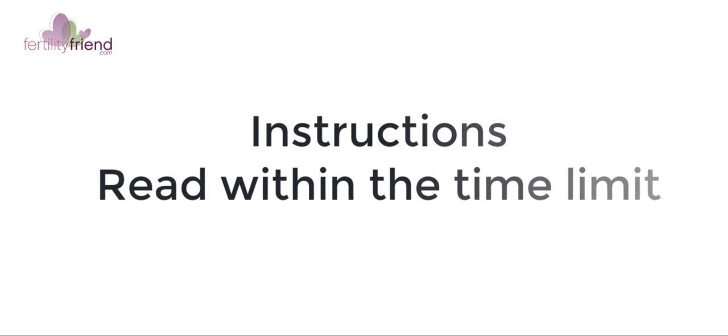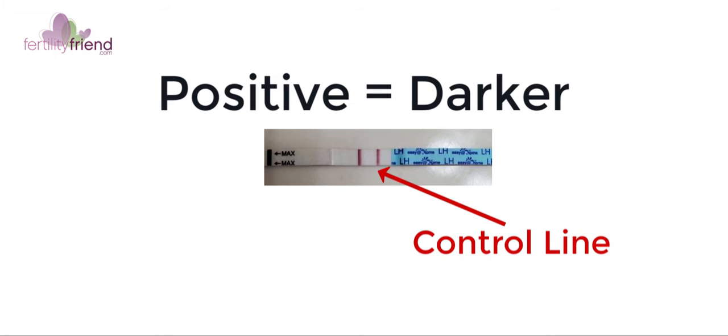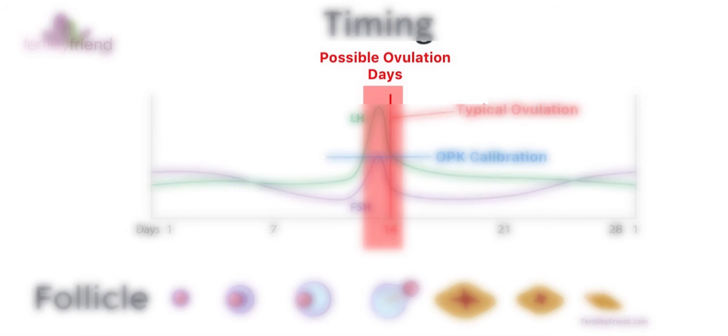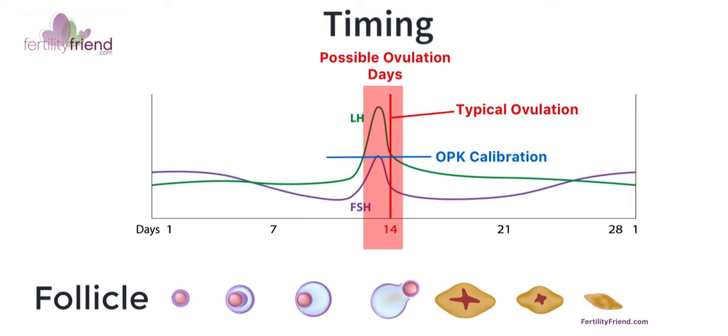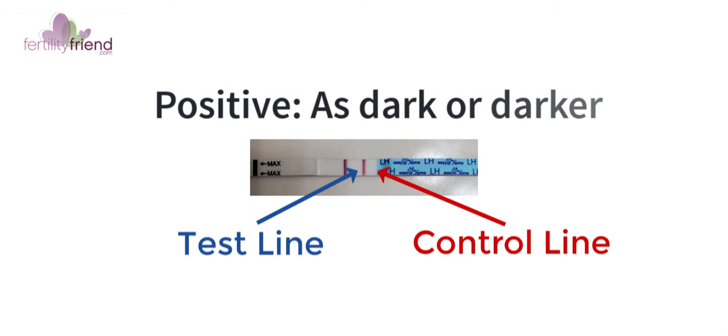Reading the test: the test generally comes with instructions on how it should be performed and timing for reading the result. Make sure to respect the instructions to be certain that the test is valid. On a practical level, the test is considered positive when the test line is darker or as dark as the control line. That may seem a simple enough criterion, but in reality many people struggle with it and occasionally over-analyze the test. Because of the timing between the LH surge and ovulation, and the LH profile variability, you do not need to be extremely accurate in reading the test.